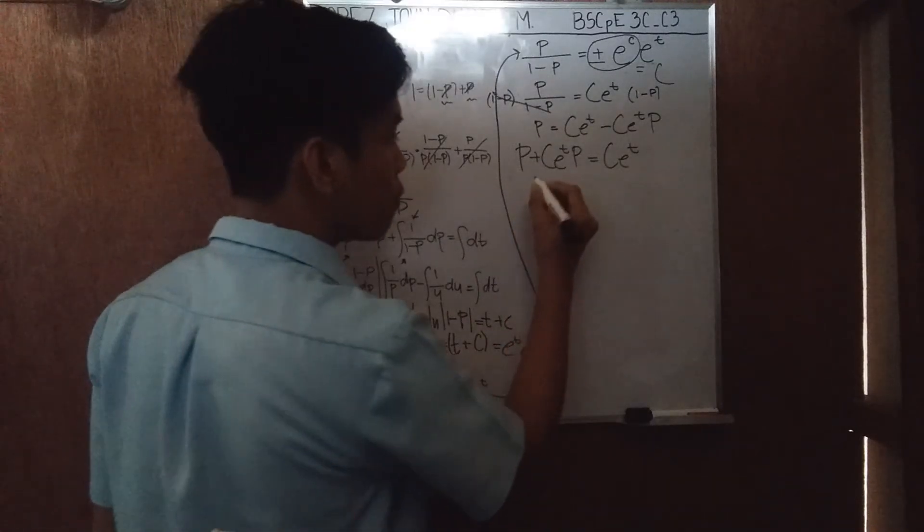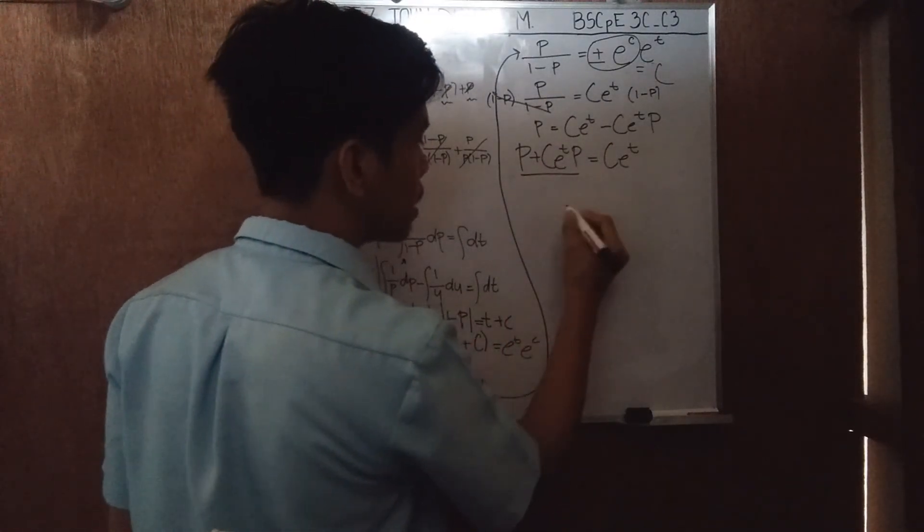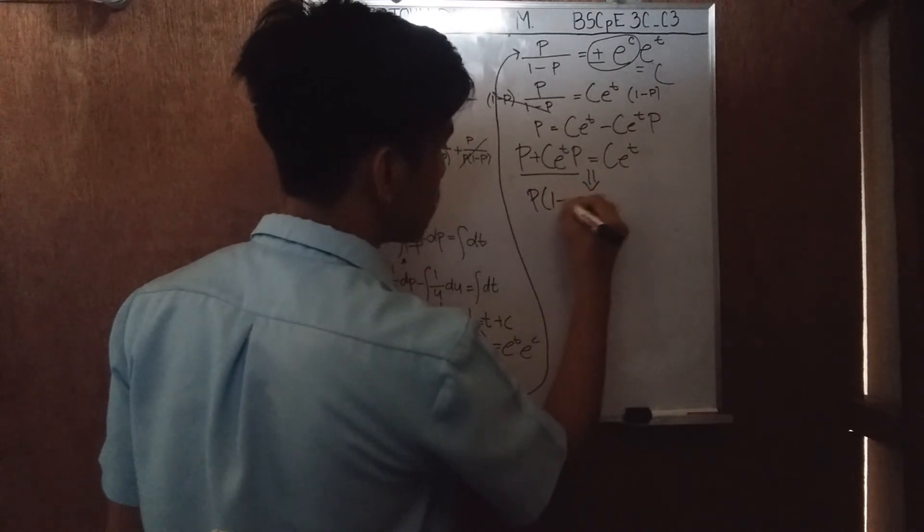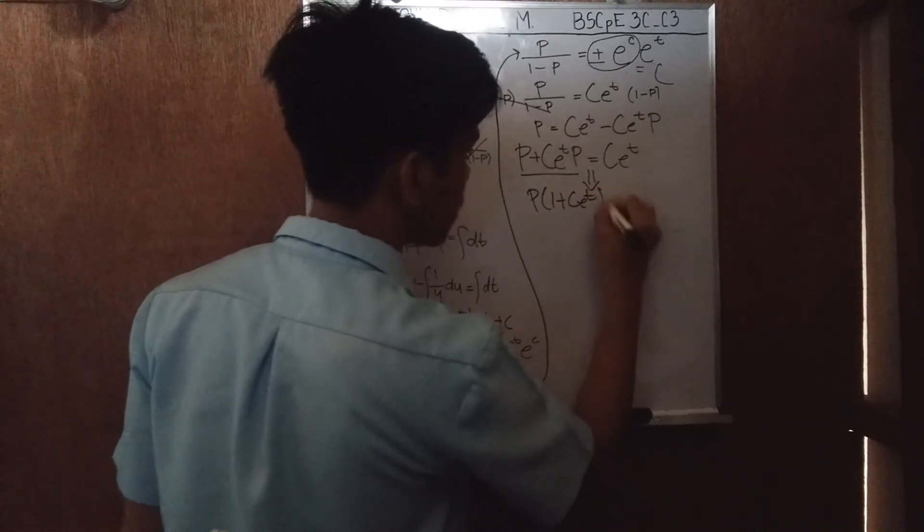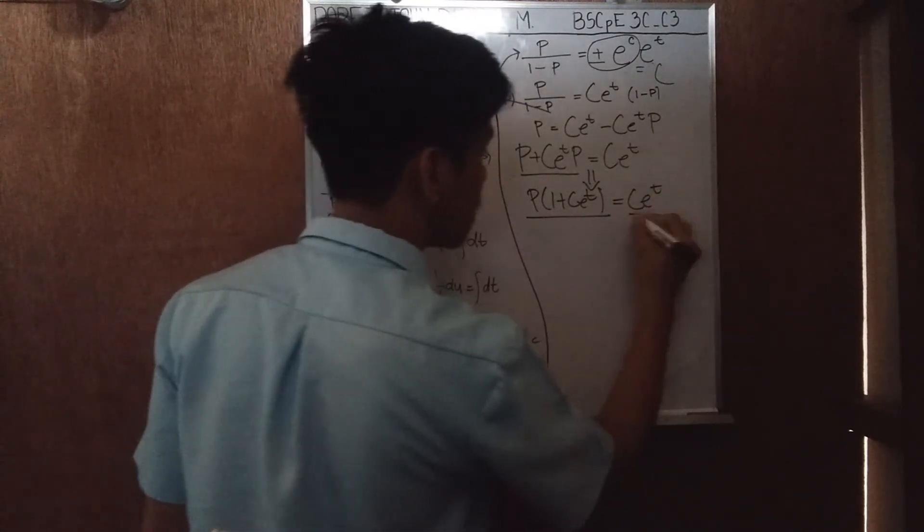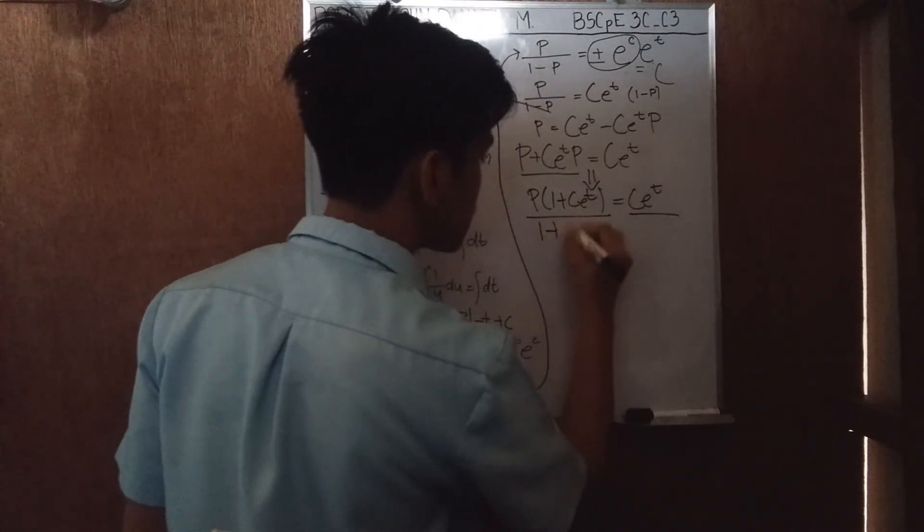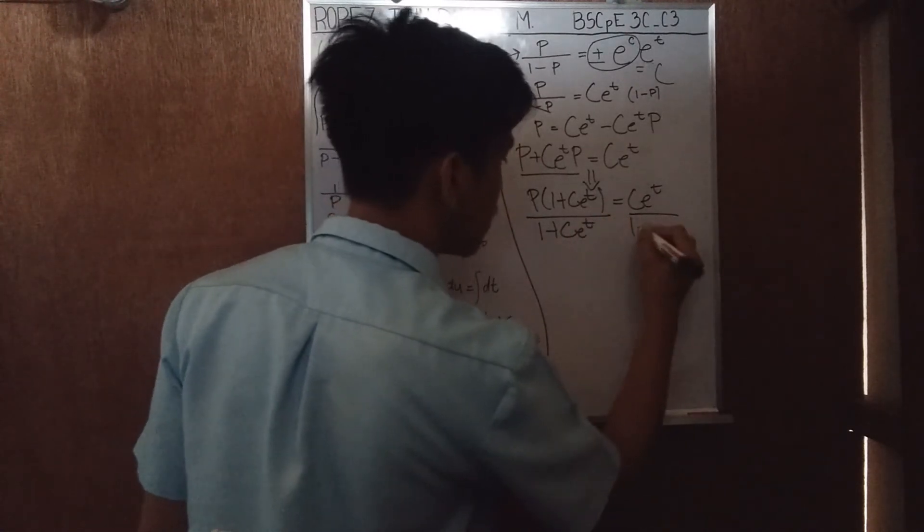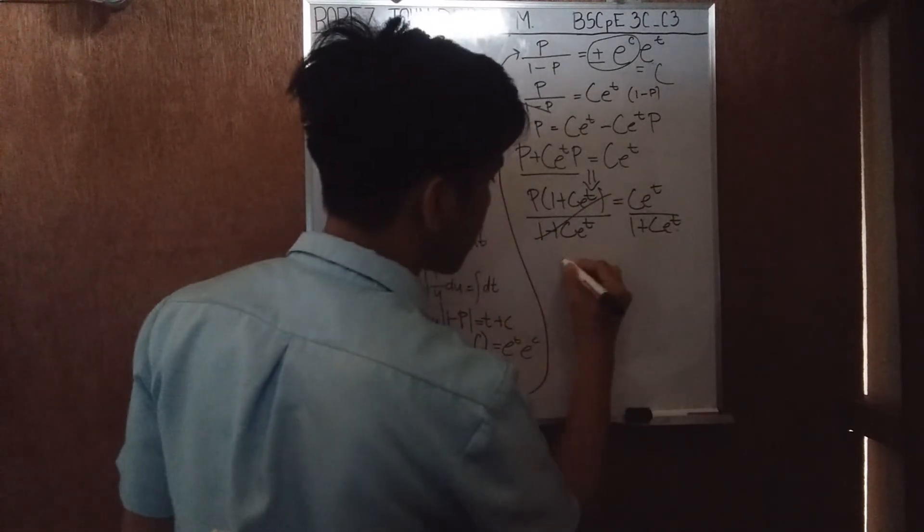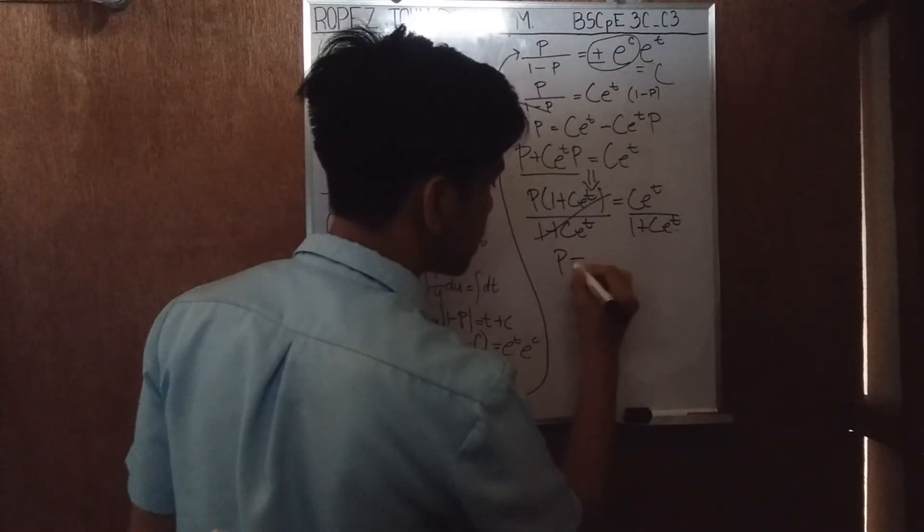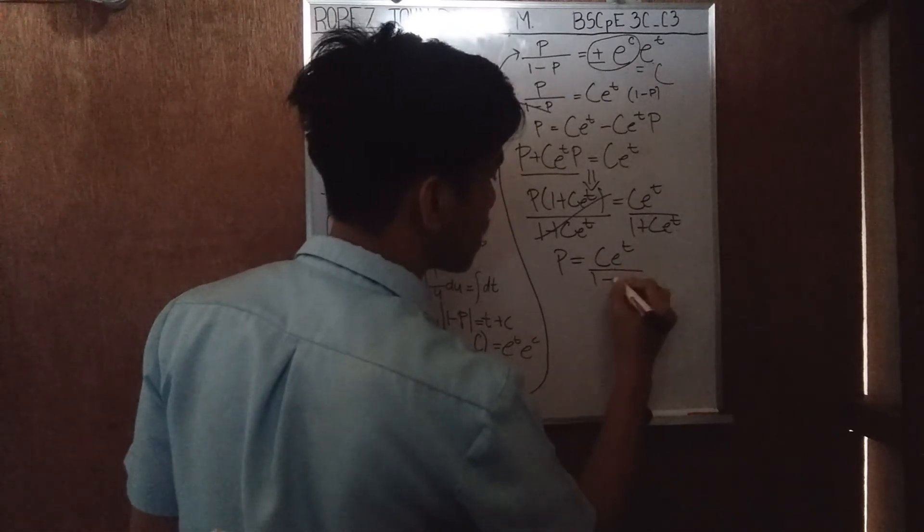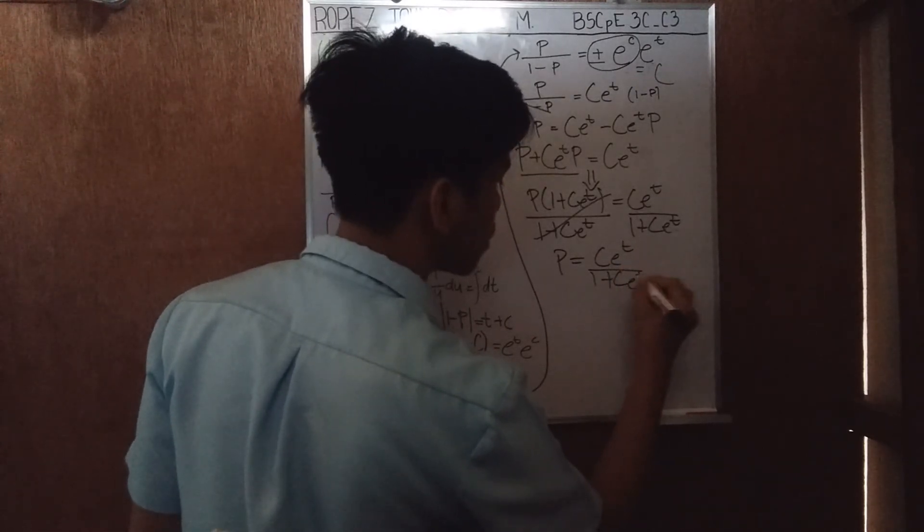So now we could already factor the p here. This will give us p times 1 plus c e to the t equals to c e to the t. Then divide both sides by 1 plus c e to the t. Then cancel it out. Then we will arrive at the final answer with p is equals to c e to the t over 1 plus c e to the t.